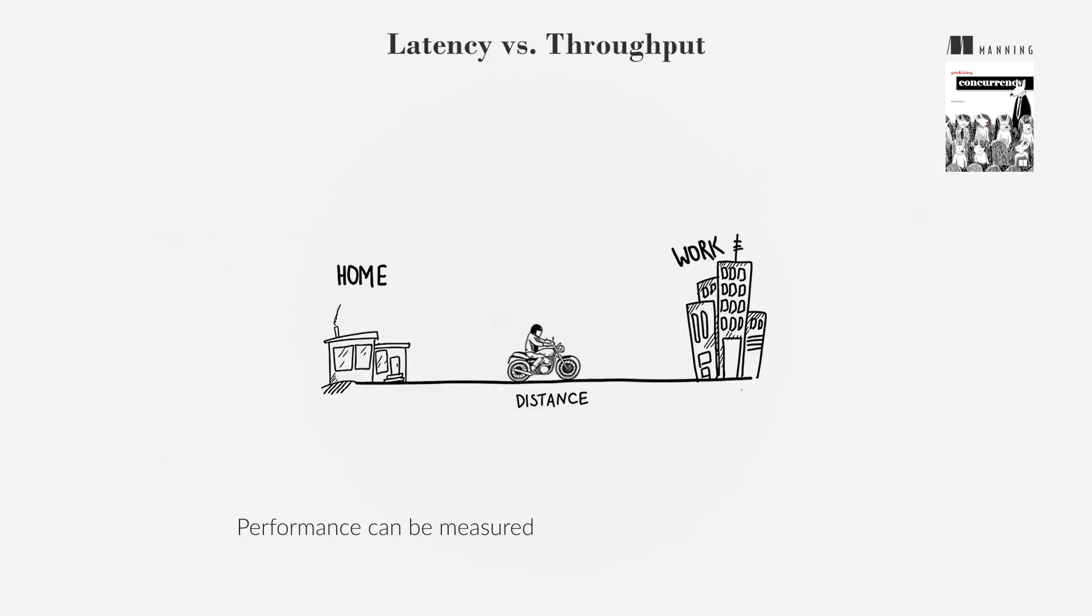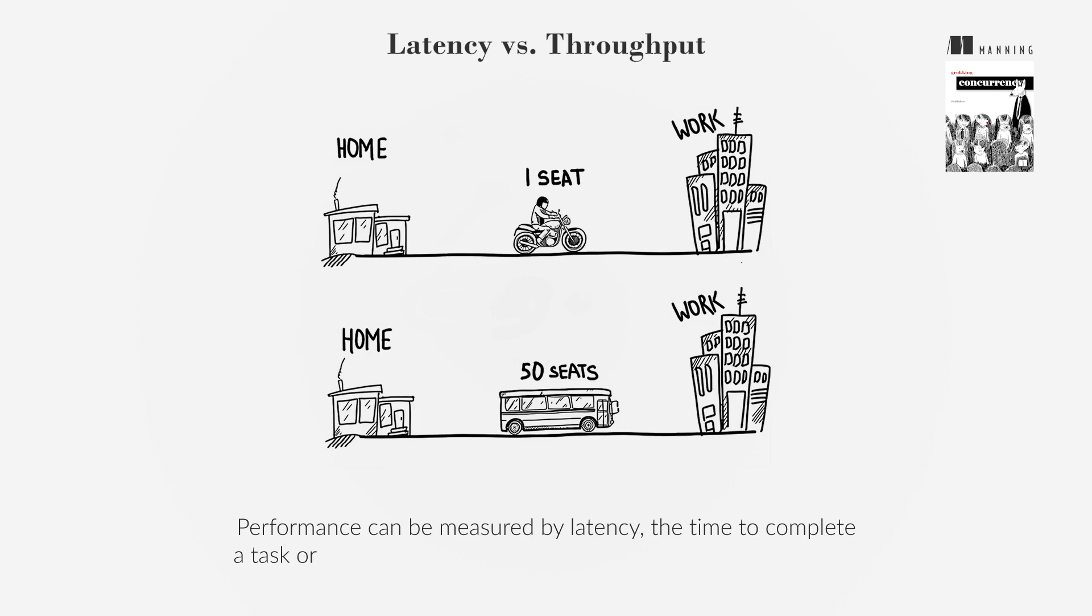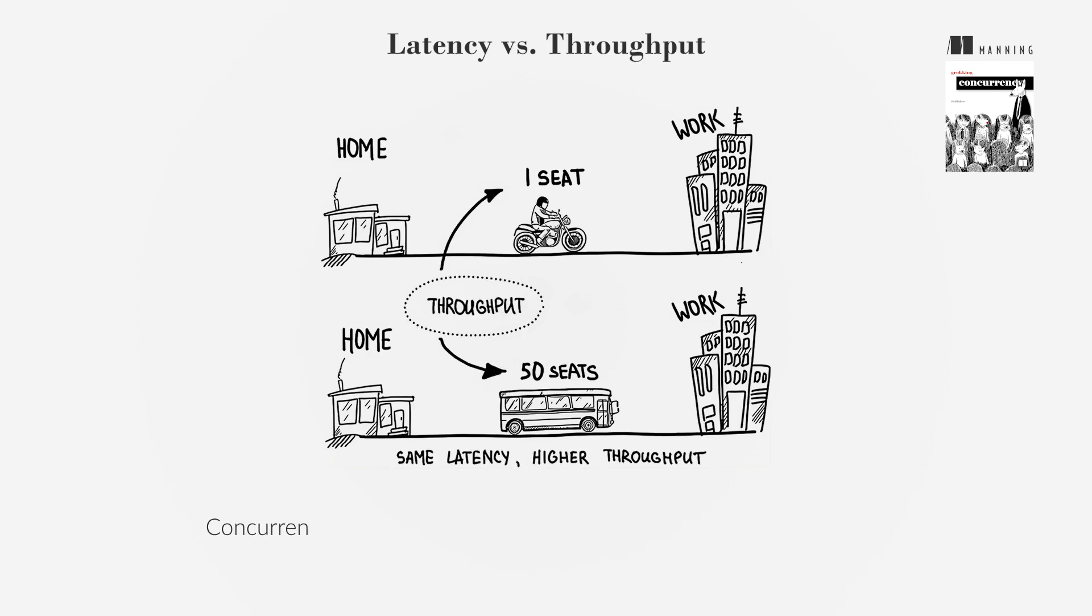Performance can be measured by latency, the time to complete a task, or throughput, the number of tasks completed over time. Concurrency can reduce latency, hide it by multitasking during delays, and increase throughput, allowing systems to accomplish more.